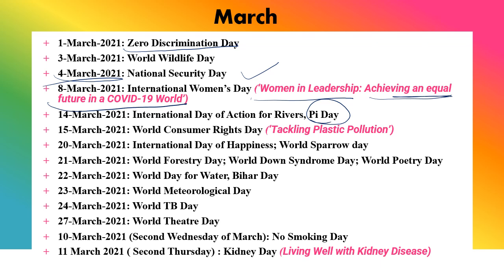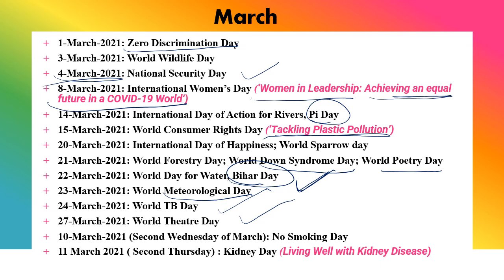15th March is World Consumer Rights Day, with theme 'Tackling Plastic Pollution.' 20th March is World Happiness Day and World Sparrow Day. 21st March is World Forestry Day, Down Syndrome Day, and Poetry Day. 22nd March is Water Day and Bihar Day. 23rd March is World Meteorological Day. 24th March is World TB Day. The second Wednesday of March is No Smoking Day, and the second Thursday of March is Kidney Day. This year's Kidney Day theme was 'Living Well with Kidney Disease.'